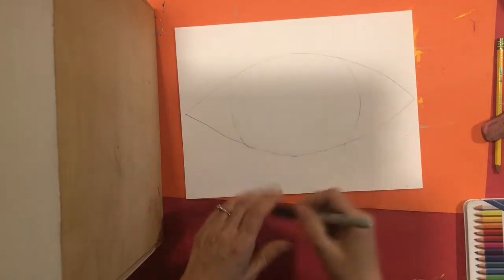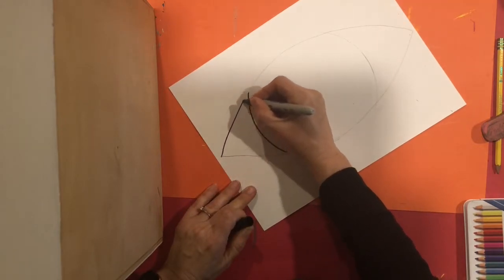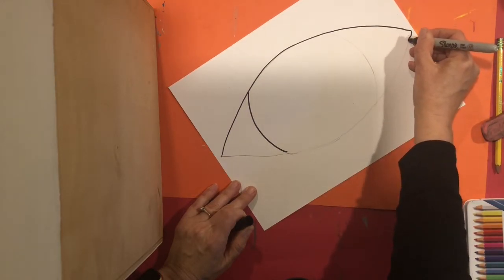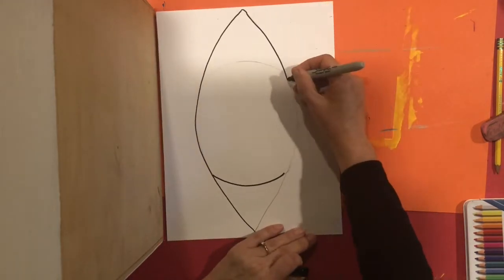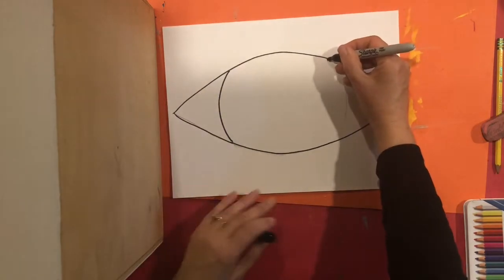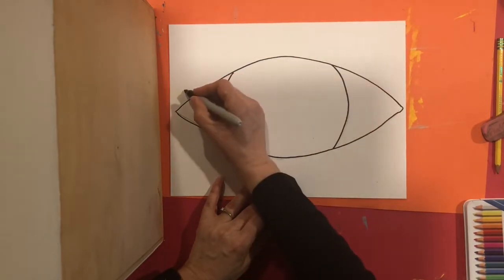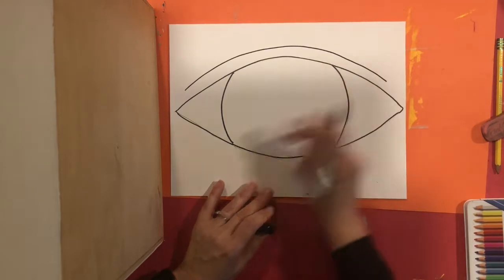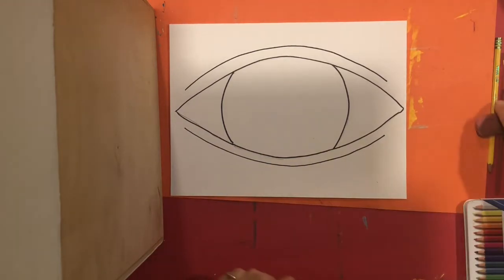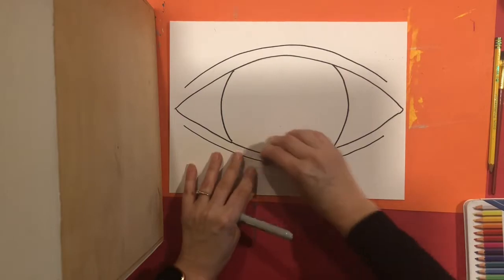Now I'm going to use my sharpie to trace the eye shape I have so far. Then I'm going to add a little curved line here — that's the eyelid — and do the same on the bottom. René Magritte did not add eyelashes on his painting, but if you want to you can, or you can leave it as is.